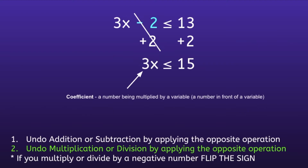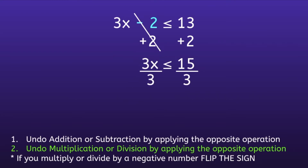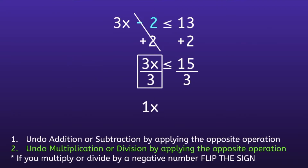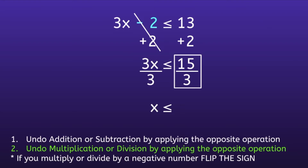So 3 is being multiplied by x. We want to do the opposite of multiplying by 3, which is dividing by 3. Notice how the fraction bar means division. On the left side, we have 3 divided by 3, and any number divided by itself is always 1, so 3x divided by 3 leaves us with just x. Pay attention to the special rule: if you multiply or divide by a negative number, flip the sign. Since we divided by a positive number, we don't have to worry about this rule, so we bring down the inequality sign. On the right, 15 divided by 3 is equal to 5. So the final inequality is x is less than or equal to 5.